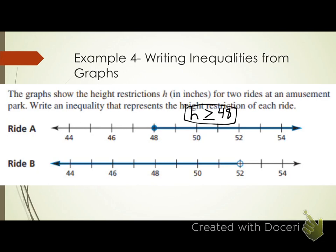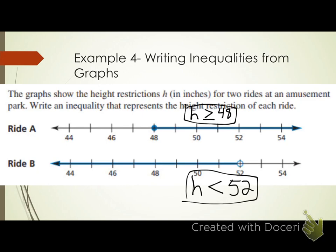For ride B, the circle is on 52 and shading goes to the left, meaning numbers less than 52. The circle is open, so 52 is not included. The inequality is H < 52 — a person must be less than 52 inches tall to ride.